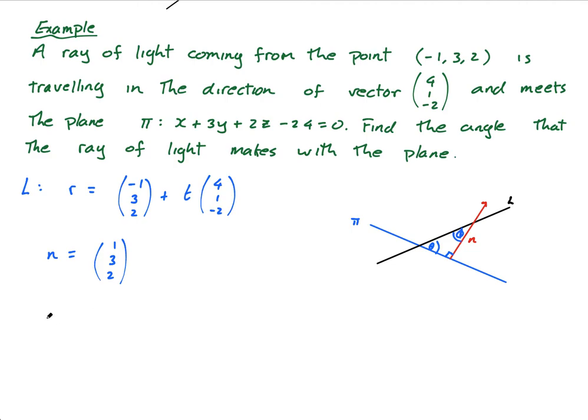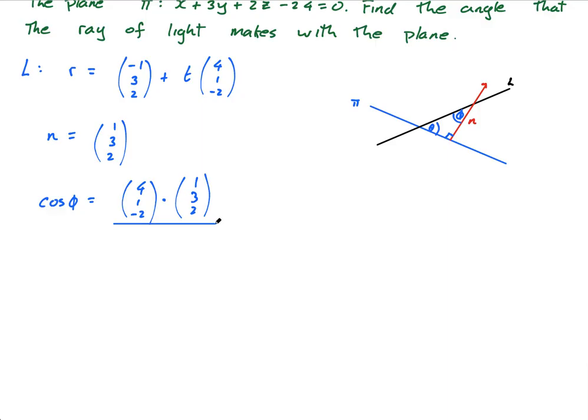So the cosine of phi is equal to this dot this. So it's the direction vector (4, 1, -2) dot (1, 3, 2). So the direction vector dot the normal divided by, because this is just the cosine angle formula, divided by the magnitude of the direction vector, which is 4² + 1² + 2² times the magnitude of 1² + 3² + 2².